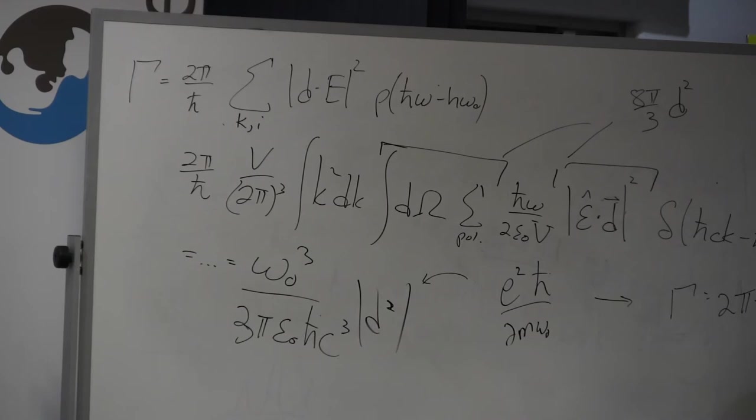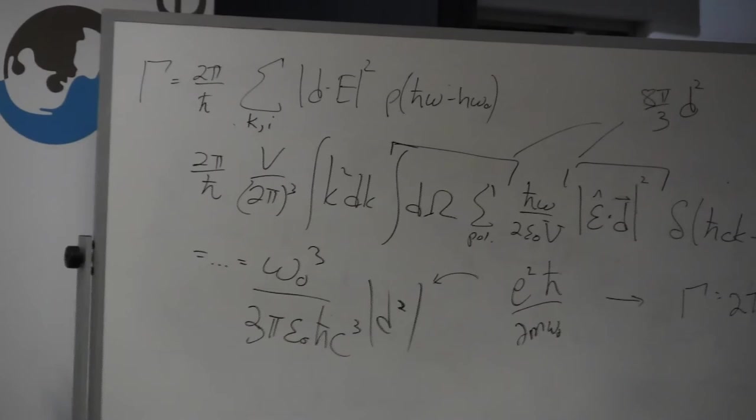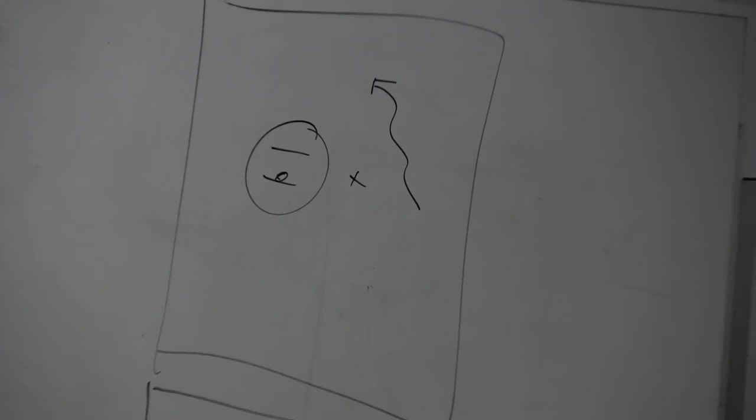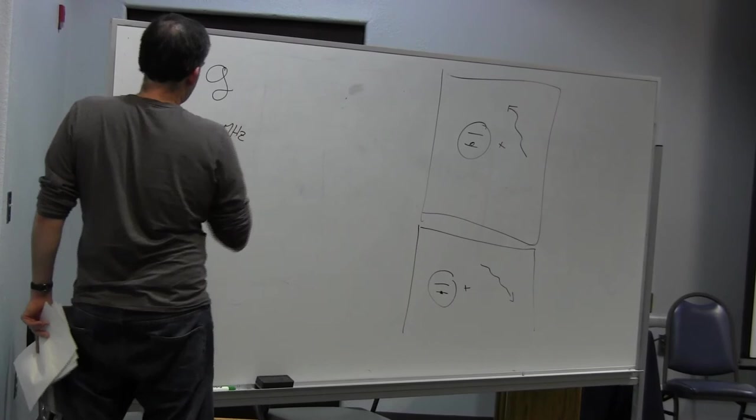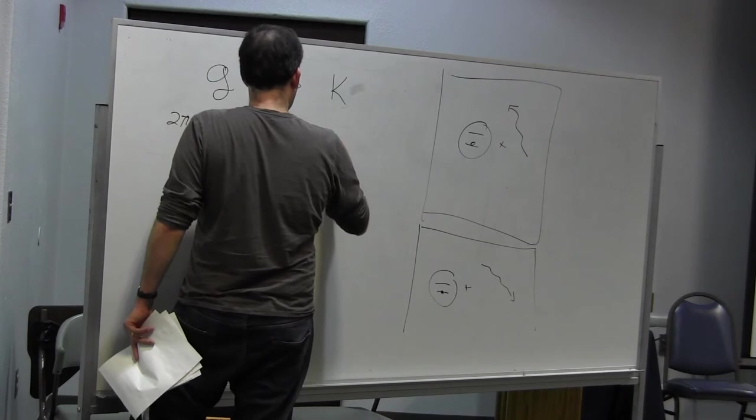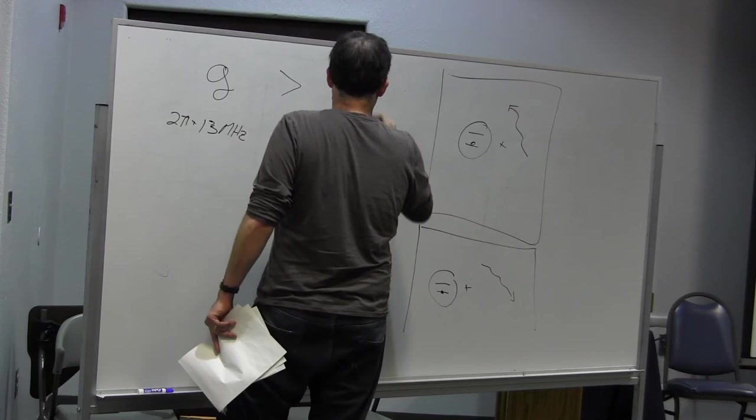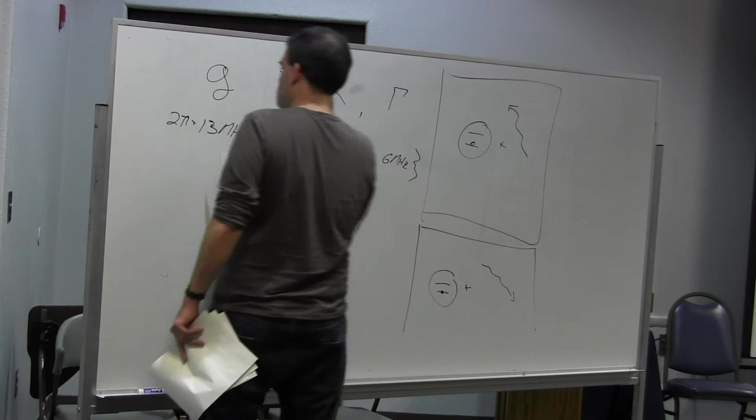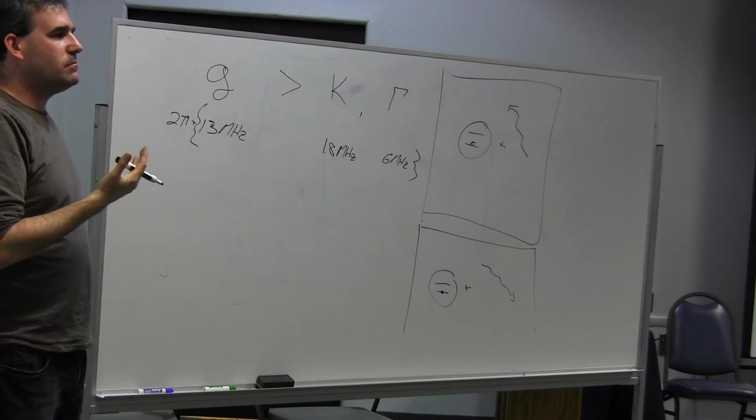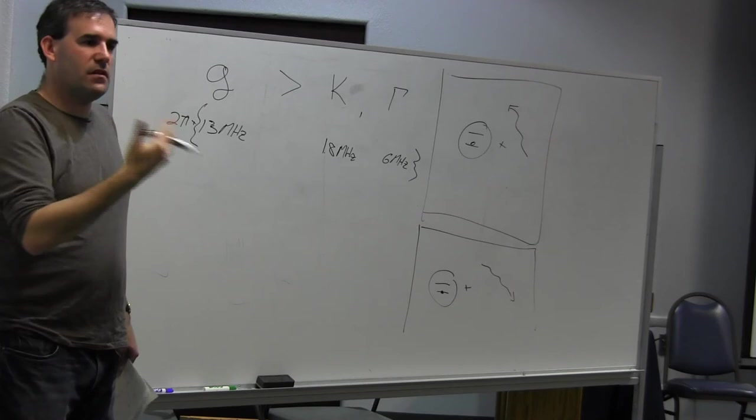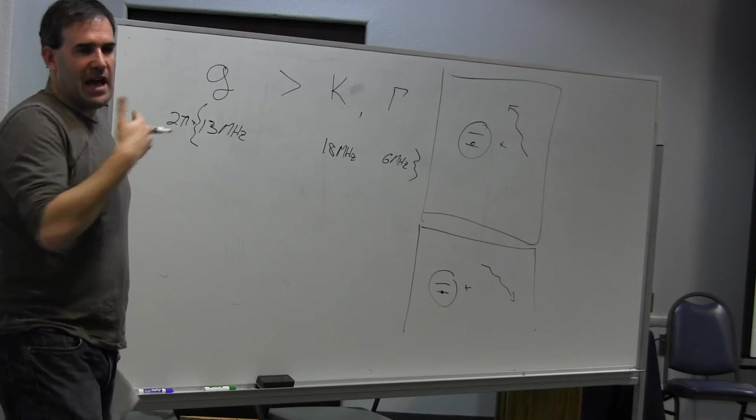Now, from all these ab initio numbers, let me just finish. From all these ab initio numbers, I've shown you what my mirrors look like. I measured the losses, blah, blah, blah. And we ended up deriving the fact that I have a cavity QED system where the single photon coupling strength, which recall was 2.5 times 13 MHz, was greater than the decay rate of the field, which was 1.8 MHz, and of the atom.